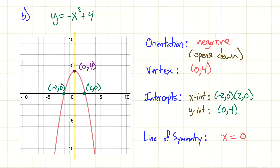So if I give you a picture of this graph on a test, or even just the equation and you have to graph it, you should be able to tell me all this information: what's the orientation, what's the vertex, what are the intercepts, and what's the line of symmetry. This would be a good example of a test question.